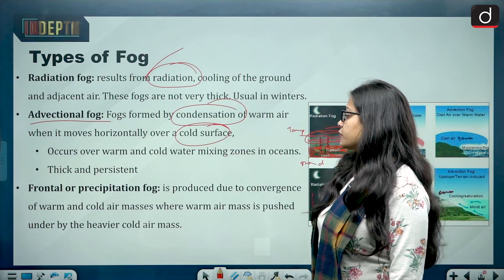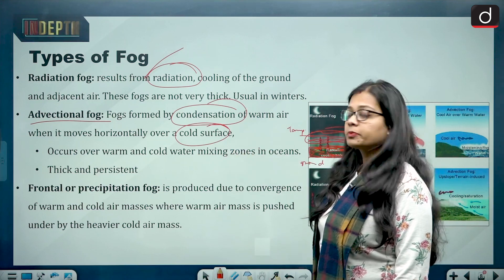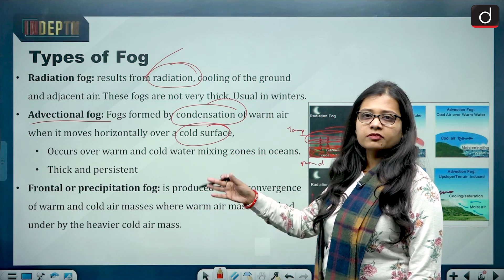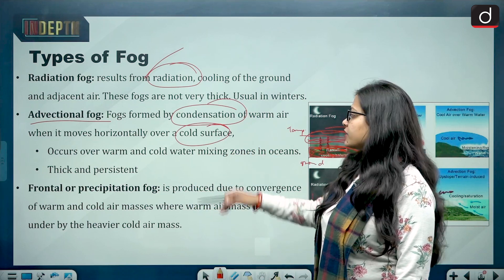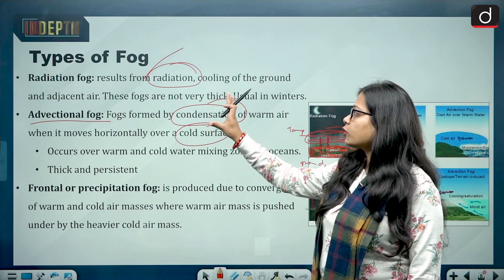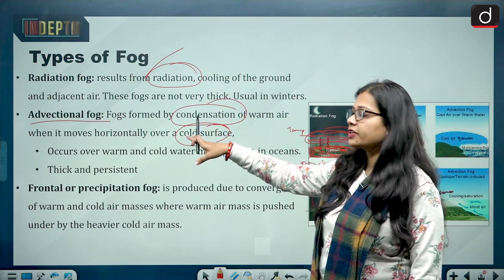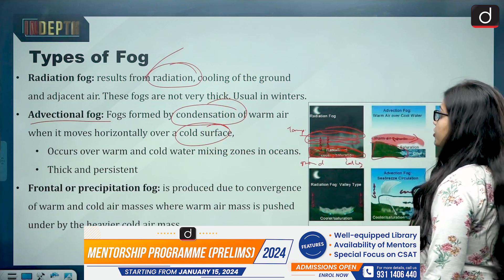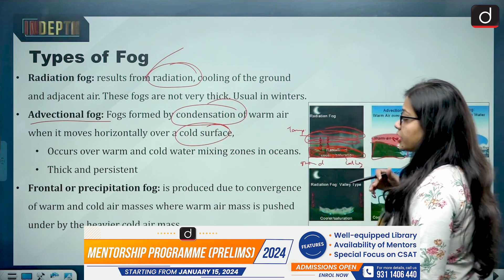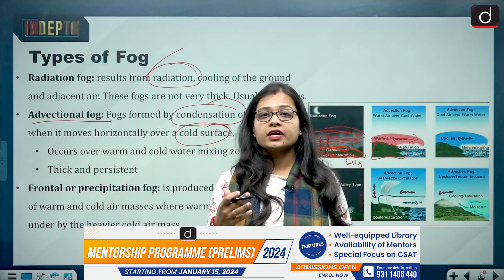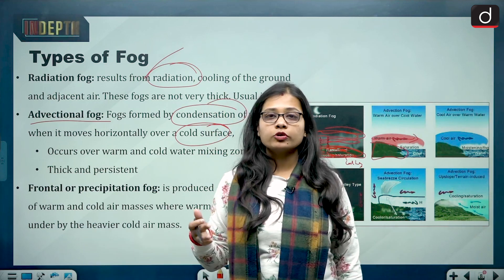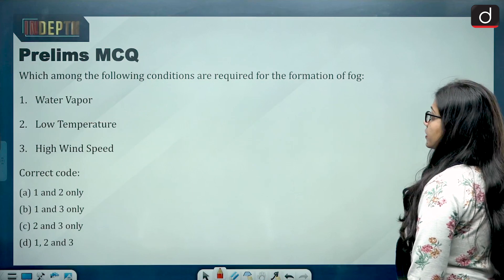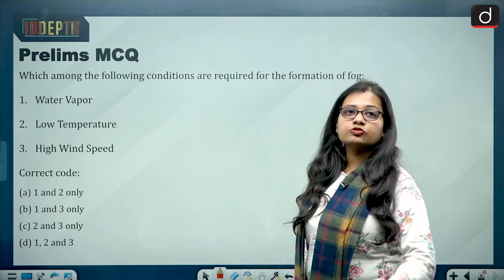Frontal or precipitation fog is also very similar to advectional fog. So the main types to know are radiation fog and advectional fog, and these explain why North India is so prone to fog formation.